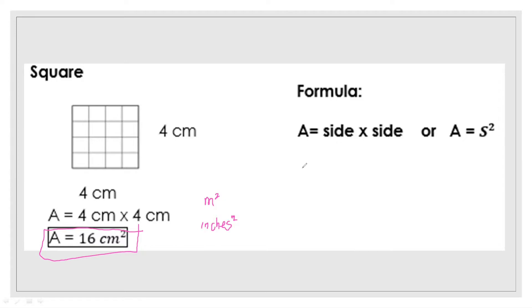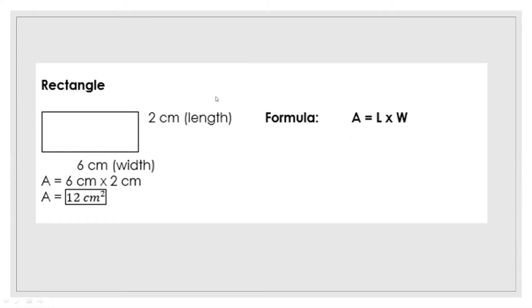That is how we get the area of a square. Next polygon is the rectangle. The formula for the area of a rectangle is length times width. We have here 2 centimeters and 6 centimeters — multiplying them: 6 times 2 is equal to 12. The unit is square centimeter, so the area of our rectangle is 12 square centimeters.